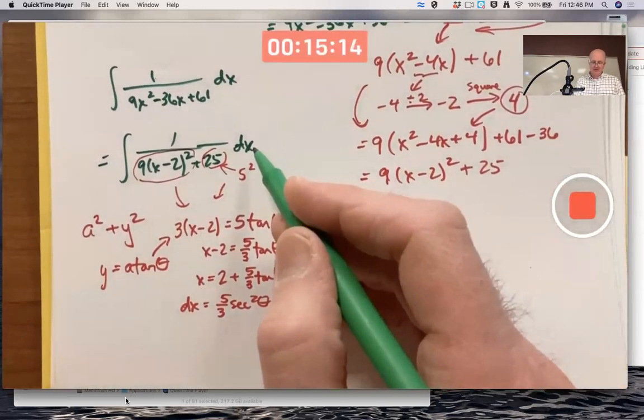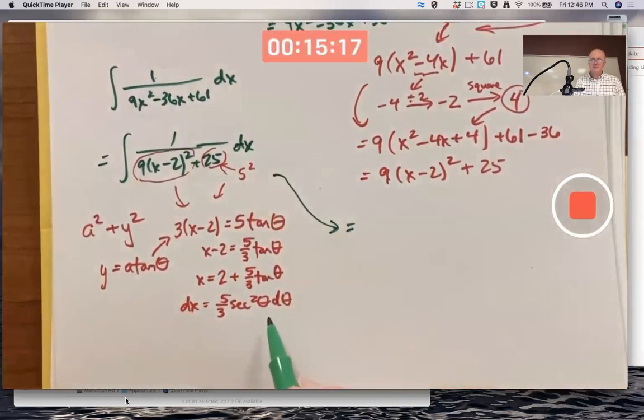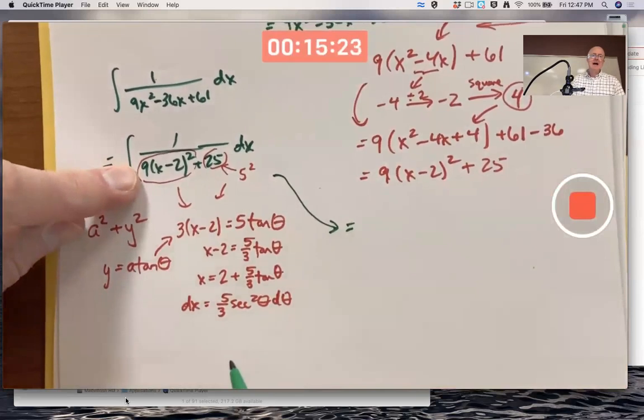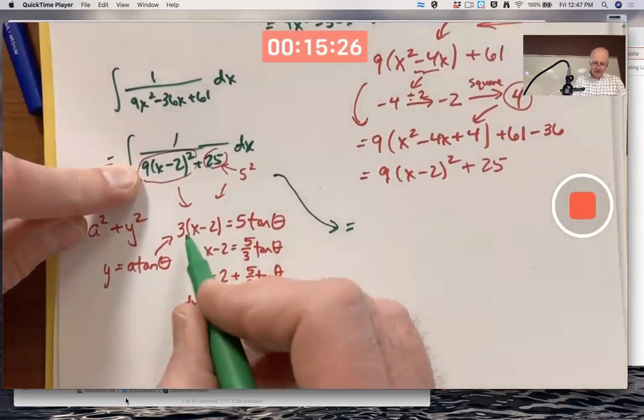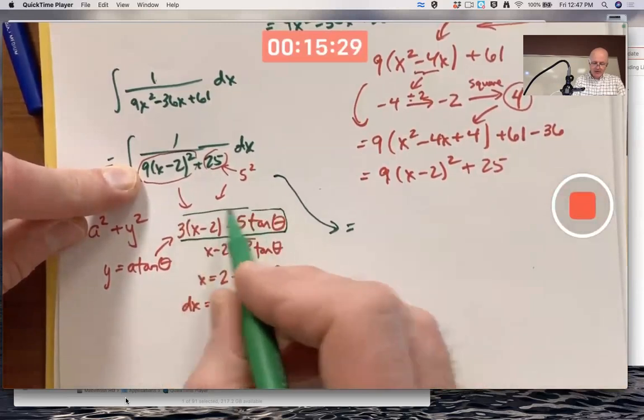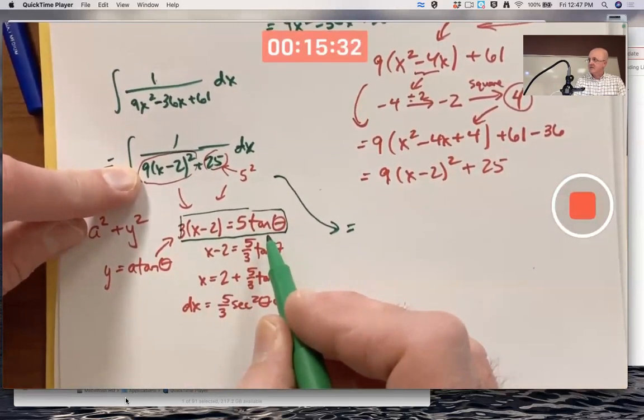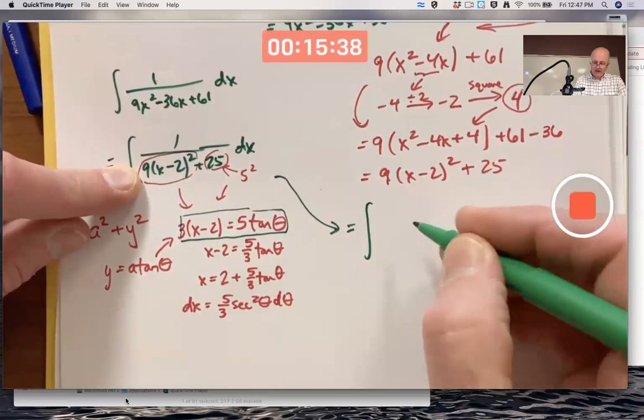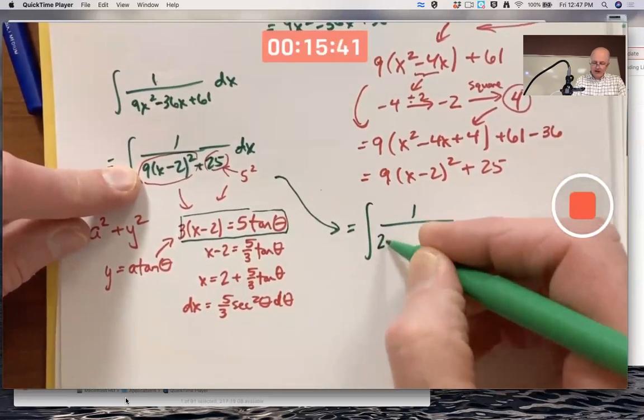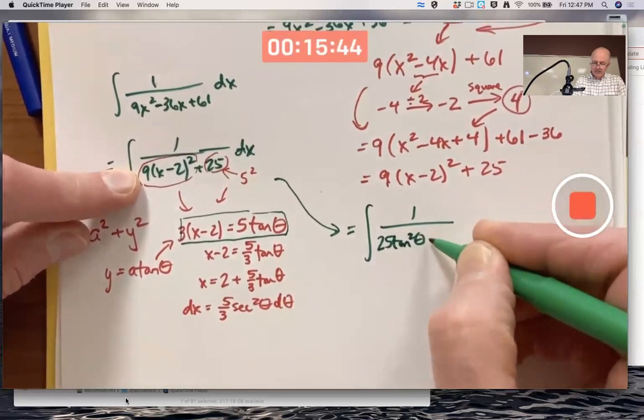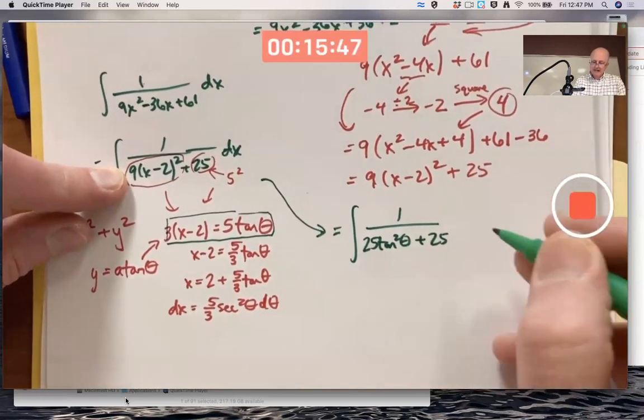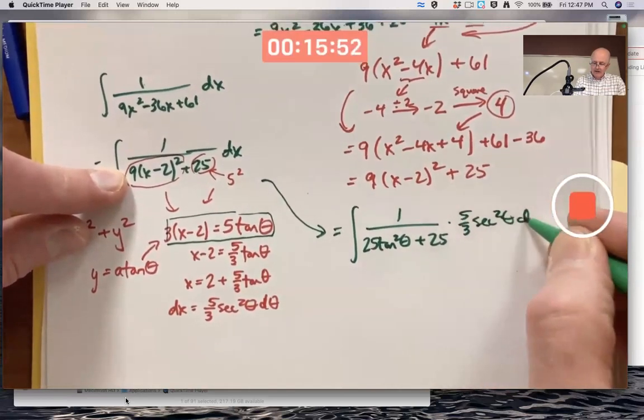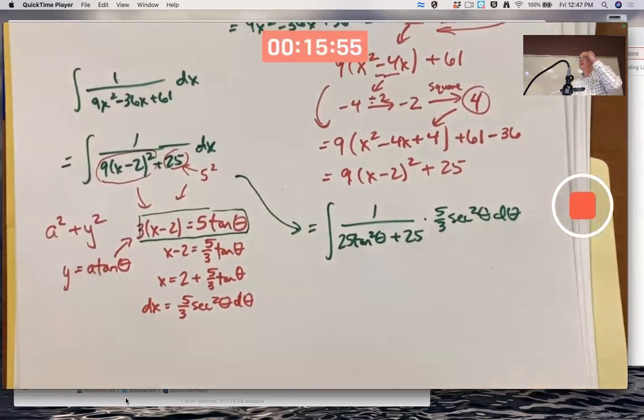So now I do all these substitutions. Replace that dx there with 5/3 secant squared θ dθ. Replace the 25, well, the 25 stays as is. Replace 9 times (x - 2)² with this thing squared, which means you'll replace it with 25 tan² θ. This is going to become the integral of 1 over (25 tan² θ + 25) times 5/3 secant squared θ dθ. Which looks really complicated, but this is going to simplify a lot.